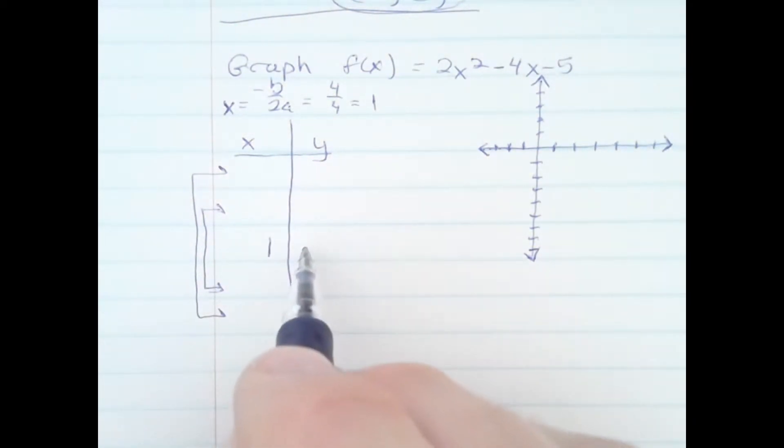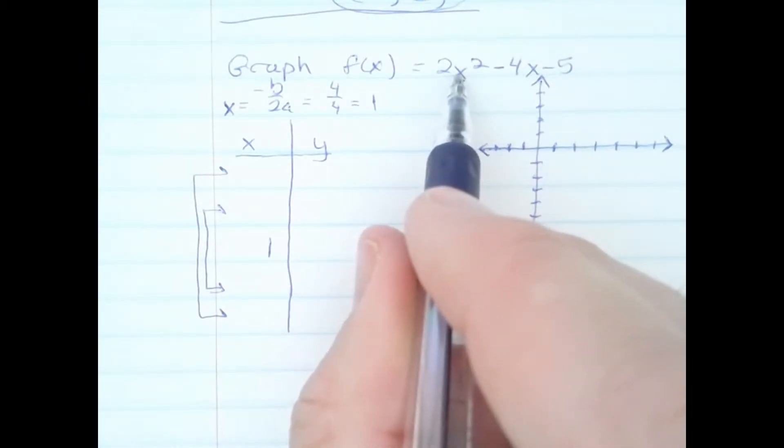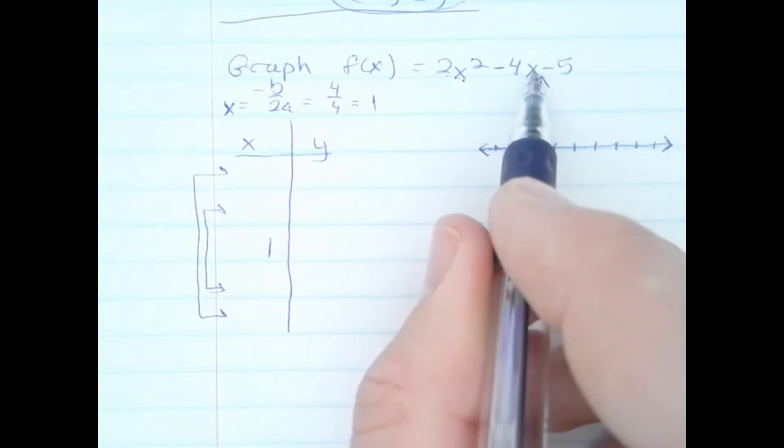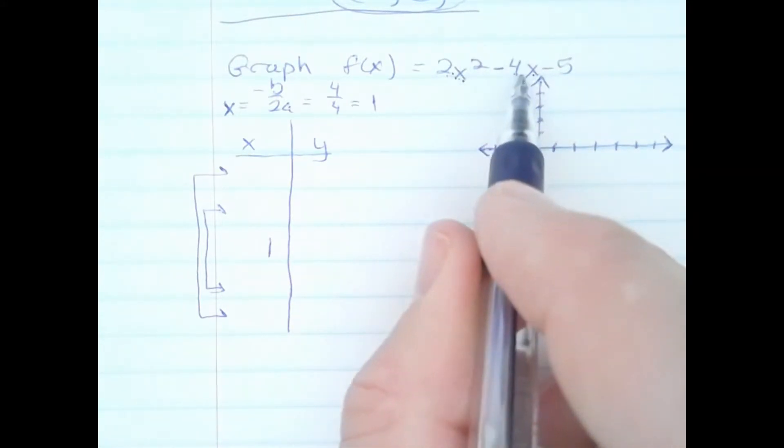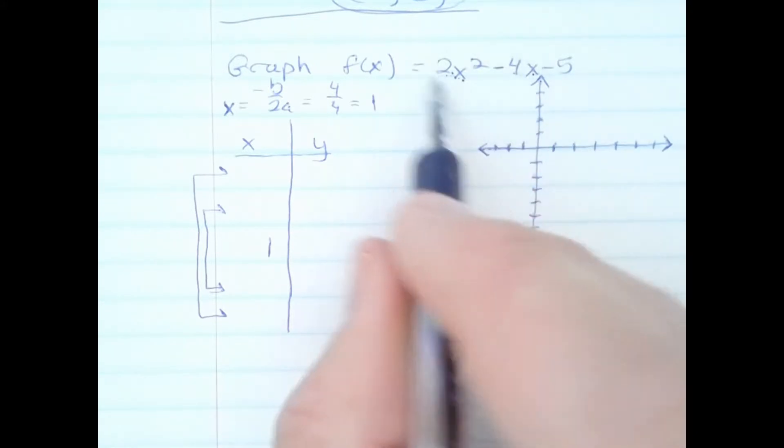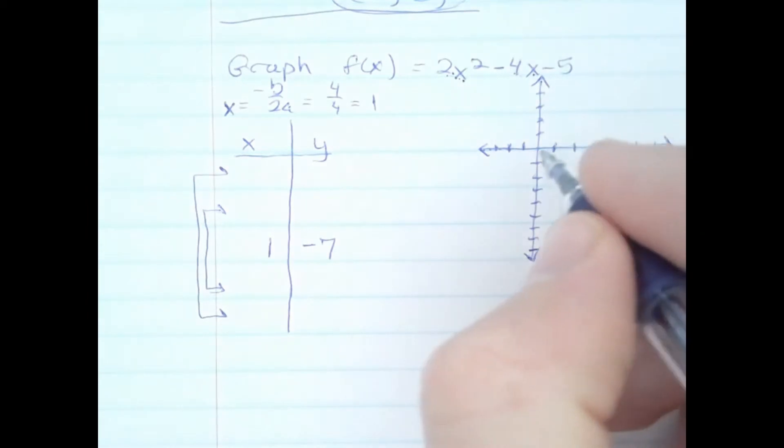First, let's find the y-value of this. Plugging 1 in here, 1 squared is 1 times 2 is 2. 4 times 1 gives me 4, so then I have 2 - 4 to get -2. All this becoming -2 minus the 5 is -7. So I have a vertex already. I can go right 1, down 7.